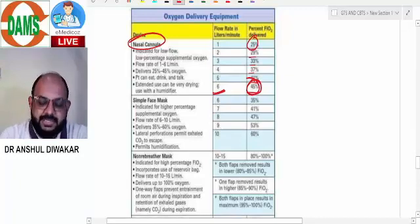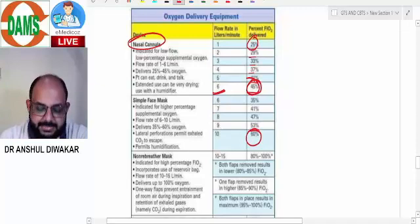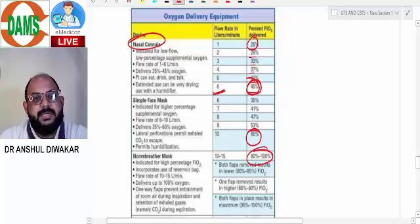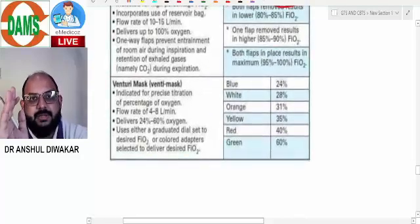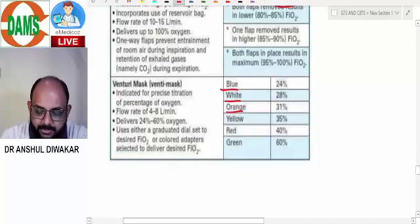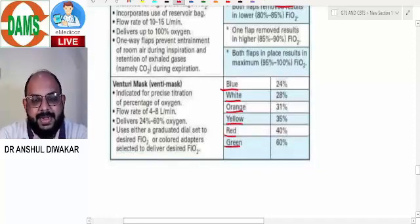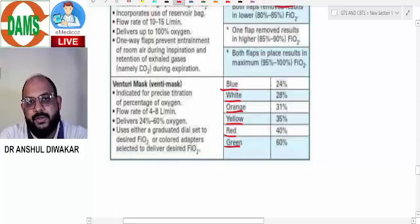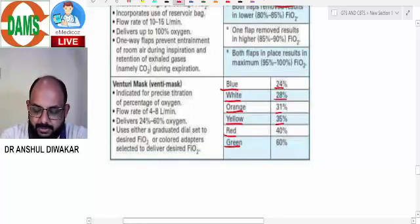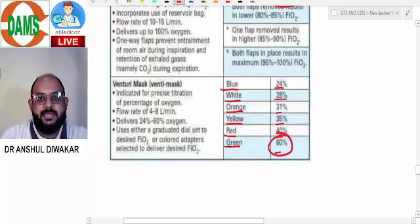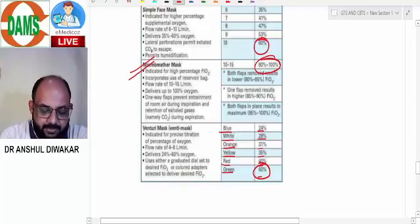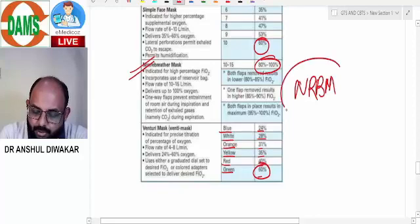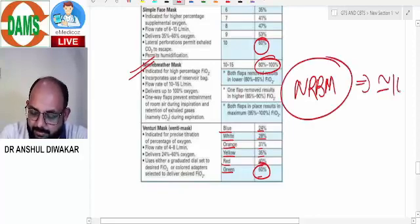Even if you increase O2 flow rate more than six liters, it won't make a difference because nasal dead space remains the same. Excess oxygen simply washes out. For simple face mask, at least 60%. For non-rebreathing mask, at least 100%. For Venturi mask, every color gives fixed FiO2: 24, 28, 31, 35, 40, 60%. Highest FiO2 is through non-rebreathing mask at approximately 100%.